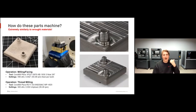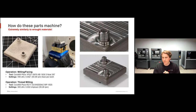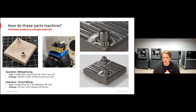Finally, how do these parts machine? These materials machine extremely similarly to your raw material. You can do operations like facing and thread milling using very similar tools and mill settings to raw material. Our 17-4 PH printed material is going to machine very similarly to the raw 17-4 PH you'd buy from your material supplier.